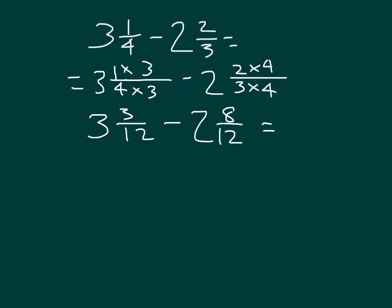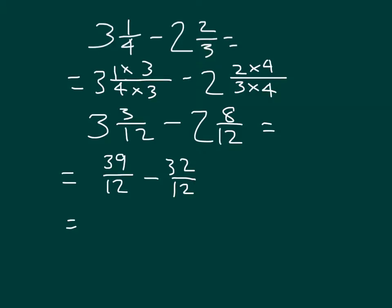Minus 2 and 8 twelfths. 3 twelfths minus 8 twelfths — I can't do that. I can take the strategy of rewriting this as an improper fraction. I'm going to need to regroup. 3 times 12 is 36 plus 3 is 39, because each whole is worth 12 twelfths. So that's 39 twelfths. I also write 2 and 8 twelfths as an improper fraction: 2 times 12 is 24 plus the 8 twelfths, which is 32 twelfths. So I have 39 twelfths minus 32 twelfths, which is equal to 7 twelfths.